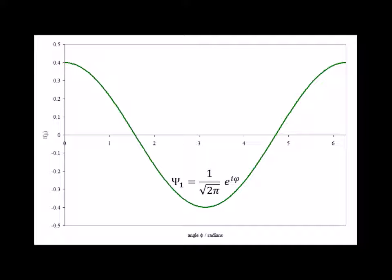The next higher energy solutions are the doubly degenerate m sub l equals 1 and minus 1 states. Here we see the real part of psi 1 where m sub l is equal to 1, which has the form 1 over the square root of 2 pi times e to the i phi. For all the wave functions in this video, we are going to be looking at just the real part of the wave function. Similar graphs could be drawn for the imaginary parts as well.